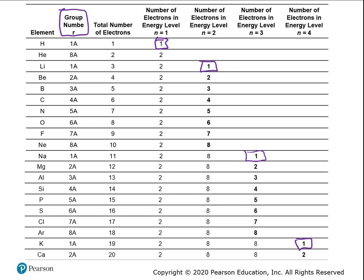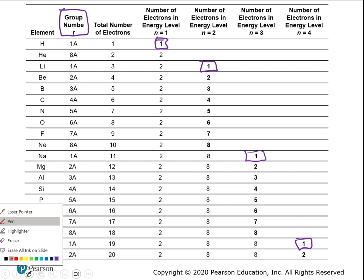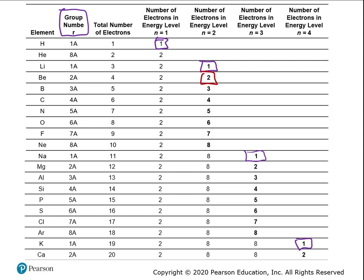Everything in group 1 is not stable. In group 2, beryllium has 2, magnesium directly underneath has 2, calcium has 2. Everything in group 2A has 2 electrons in its outer energy level — those 2 electrons are the ones used for bonding. You don't even have to memorize this; just look at the number in front of the capital A. That number tells you how many electrons are in the outermost shell.